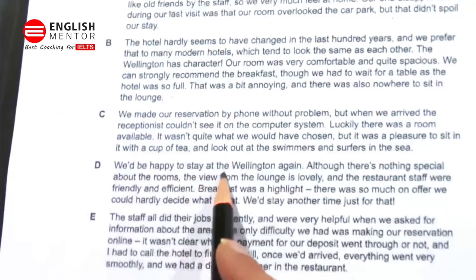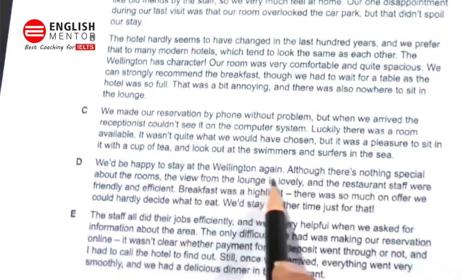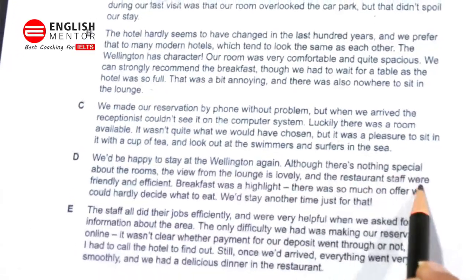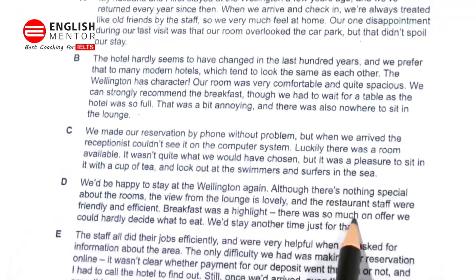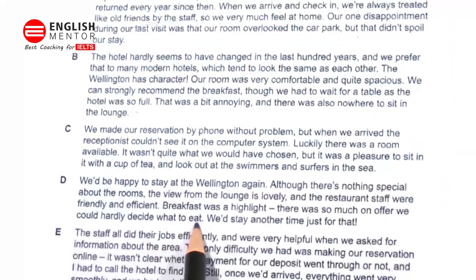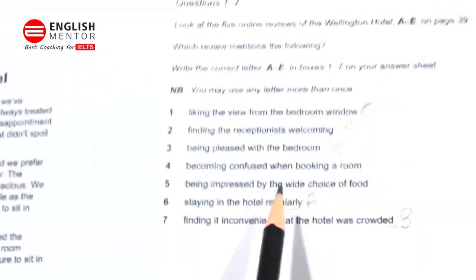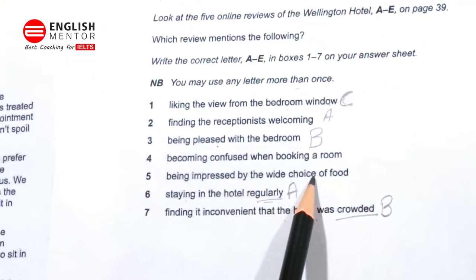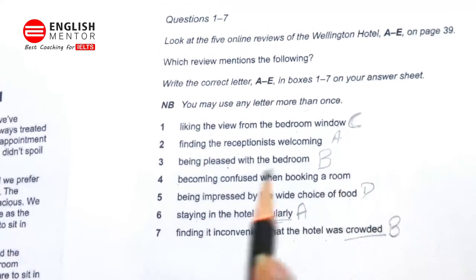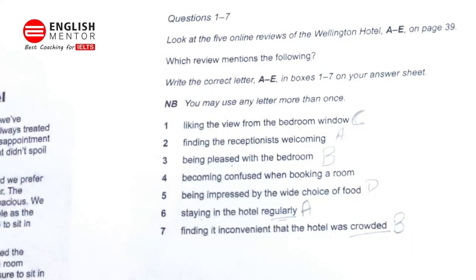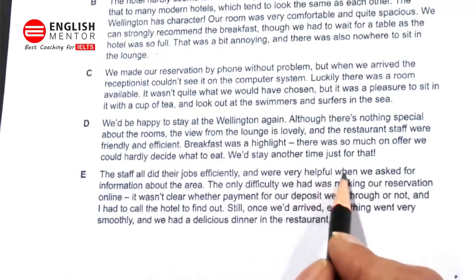Now move to D: 'We would be happy to stay at the Wellington again. Although there was nothing special about the rooms, the view from the lounge is lovely and the restaurant staff was friendly and efficient. Breakfast was a highlight — there was so much on offer we could hardly decide what to eat.' That means there was plenty of food. Going to option five — being impressed by the wide choice of food — the answer for option five will be D.